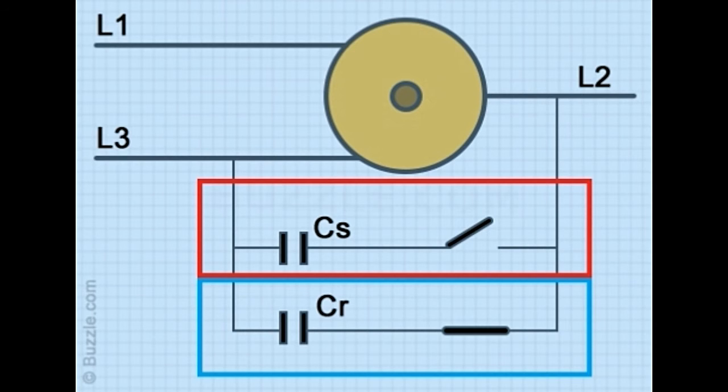As shown in the diagram, the start capacitor is used to start the motor, and then it is completely switched off. The run capacitor is always present, and it is carefully adjusted to balance the voltages at one load.